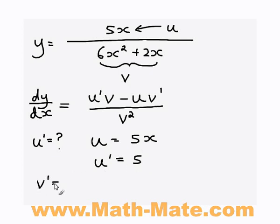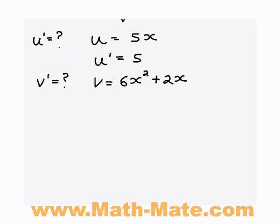Now what about v dash? We don't know what v dash equals yet, but we do know that v equals the bottom part of our fraction 6x squared plus 2x. So the derivative of v with respect to x is going to be, you take the 2 out of the power. So 2 times 6 is 12, x the power goes from 2 to 1, which is just x, plus 2.